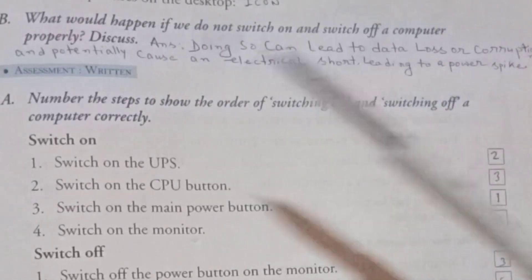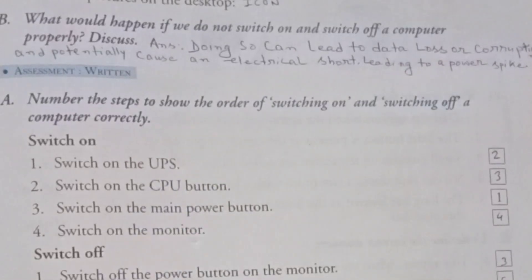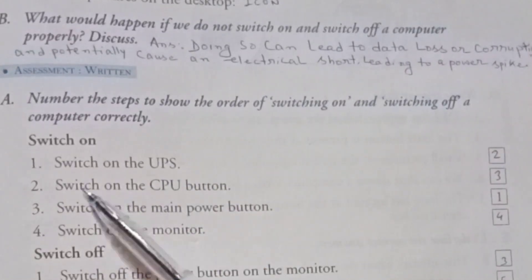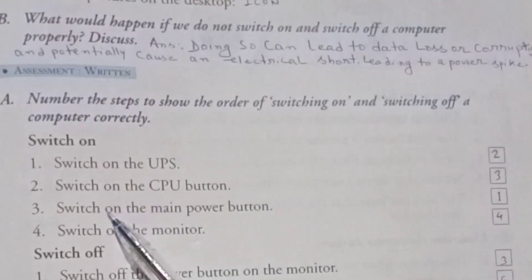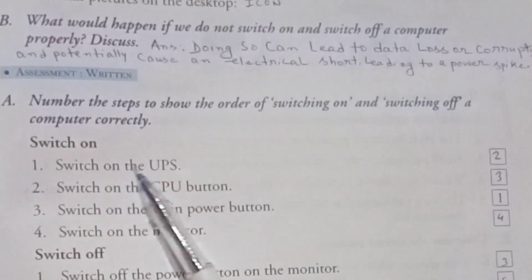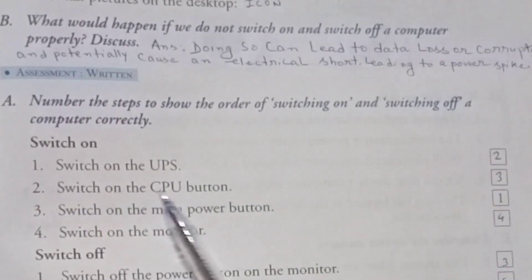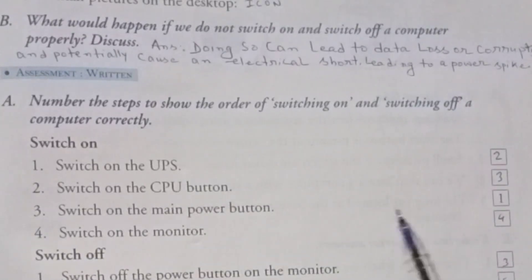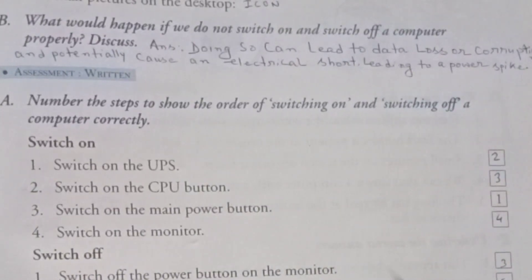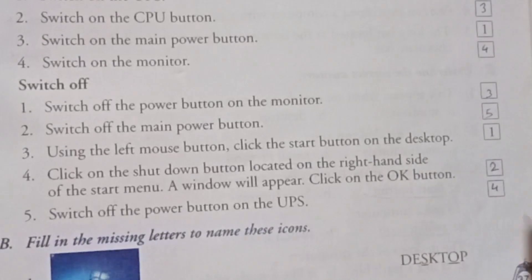Switch on: 1. Switch on the UPS. 2. Switch on the CPU button. 3. Switch on the main power button. 4. Switch on the monitor. Switch off: 1. Using the left mouse button, click the start button on the desktop.